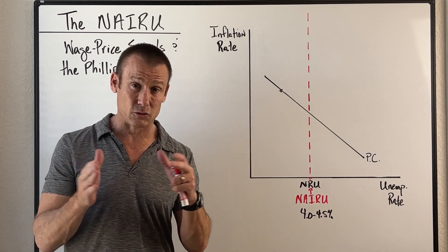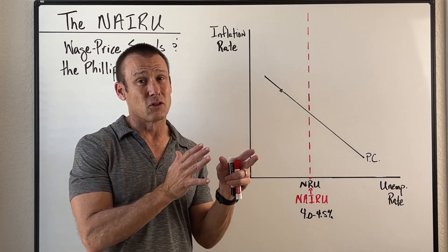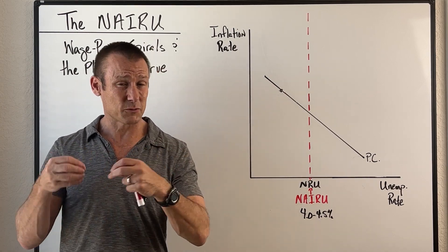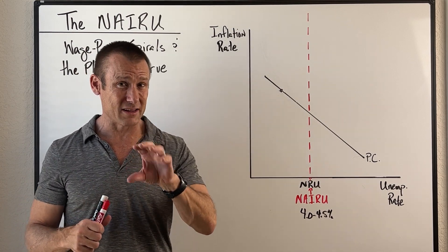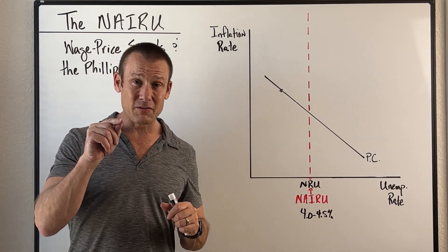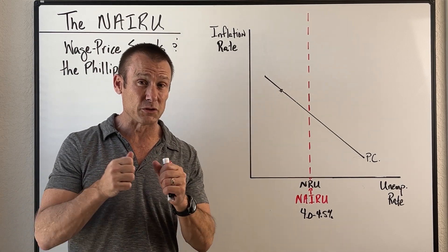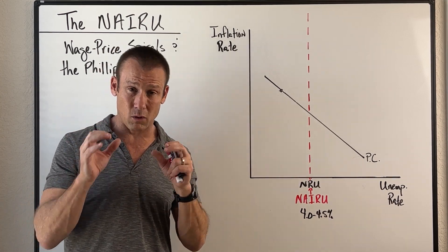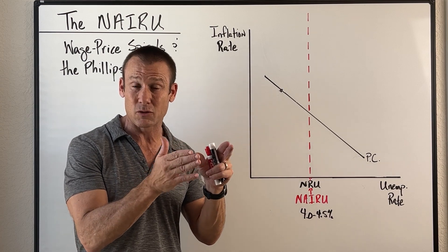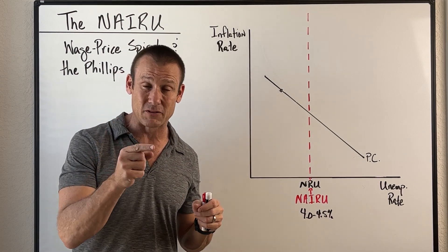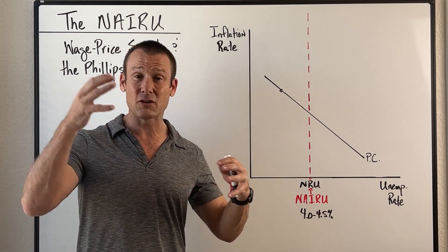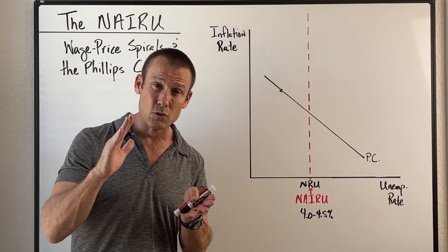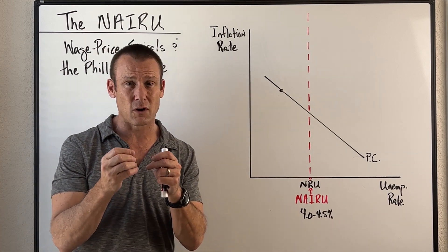Fiscal policy is the government's budget — spending, taxes, entitlement programs. Monetary policy is changing the interest rate. In the last two and a half years, we've been running the economy hot using expansionary fiscal and monetary policy. On the fiscal policy side, the key thing to look at is the deficit. If the deficit goes up, that's expansionary, stimulative policy; if it comes down, we're reducing stimulation.